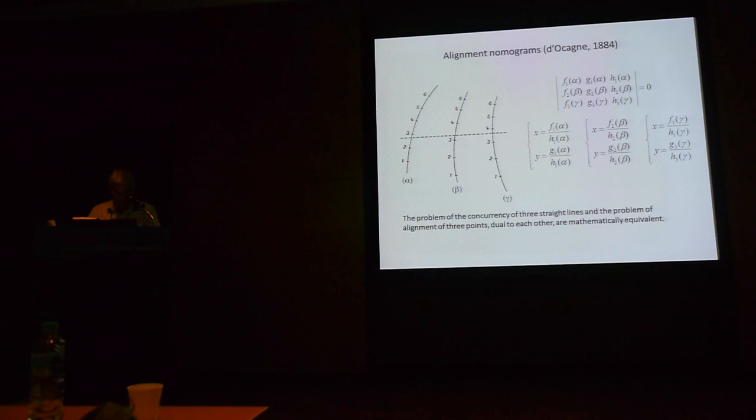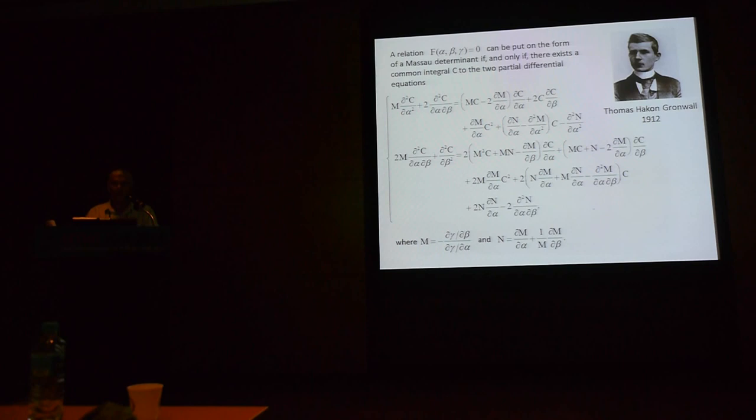In general, the engineer is not supposed to develop a truly mathematical activity. We want to show through the example of nomography that this representation is somewhat erroneous. It is easy to realize that the engineer is sometimes a creator of new mathematics and in addition that some of the problems which he raises can in turn irrigate the theoretical research of mathematicians. Firstly, the problem of general anamorphosis, that is to say of characterizing the relationships between three variables that can be put in the form of a Massau determinant, has inspired many theoretical research. Some mathematicians and engineers have brought partial responses to this problem before that. In 1912, the Swedish Thomas Hakon Grönwall gives a complete solution.